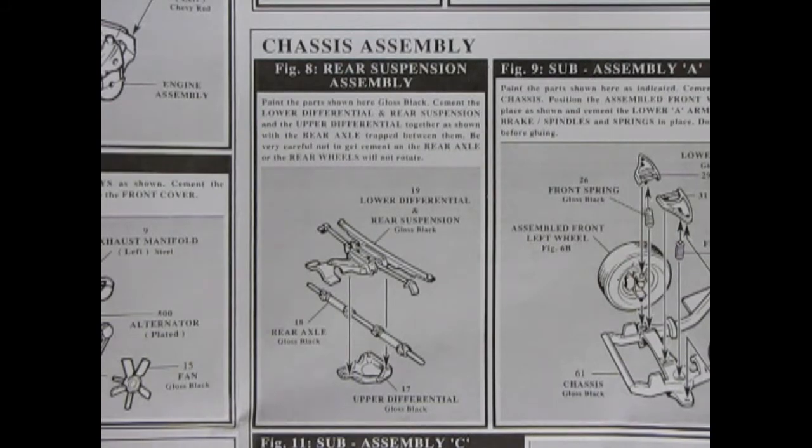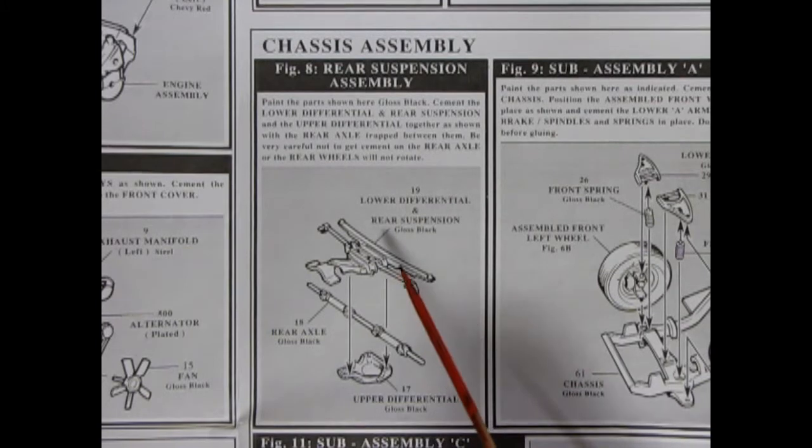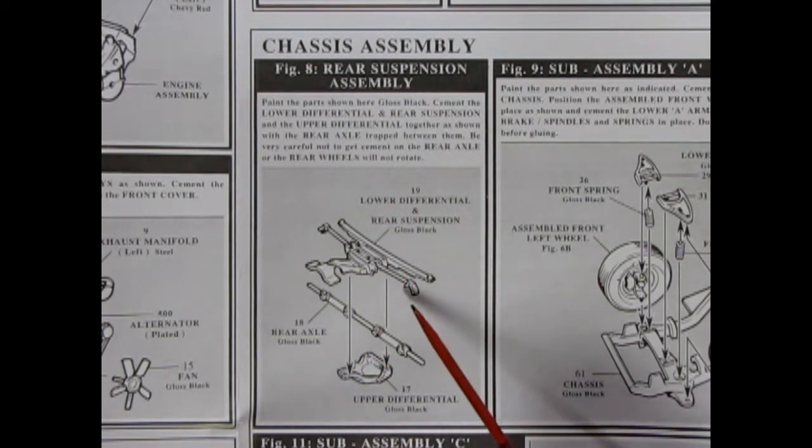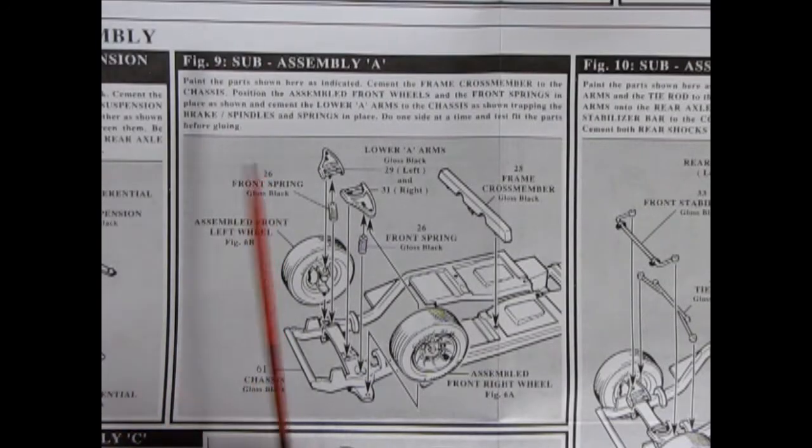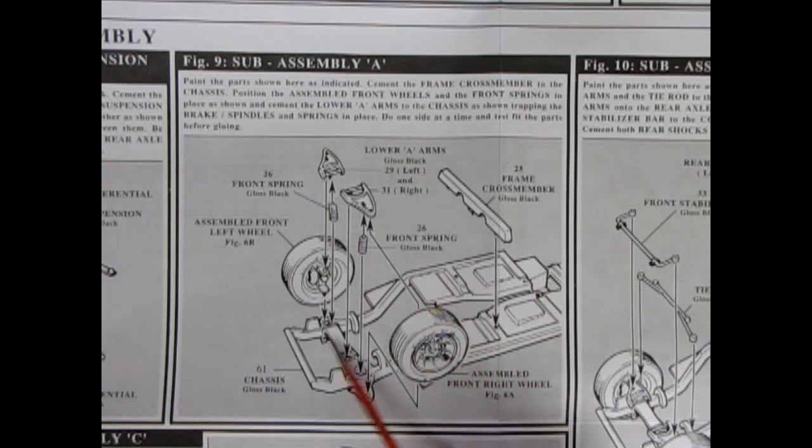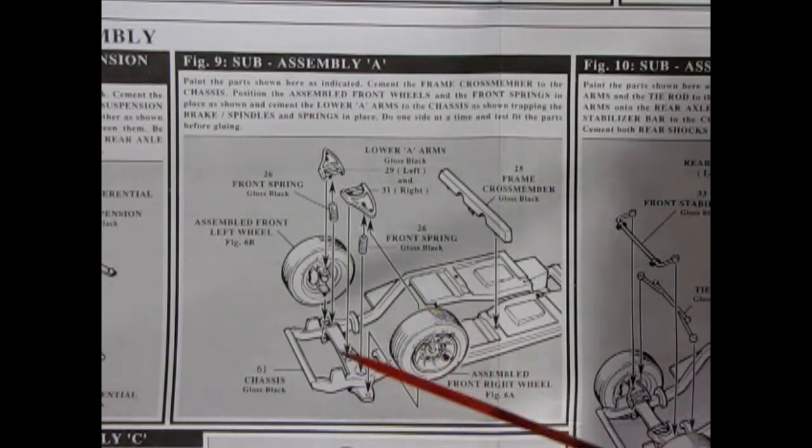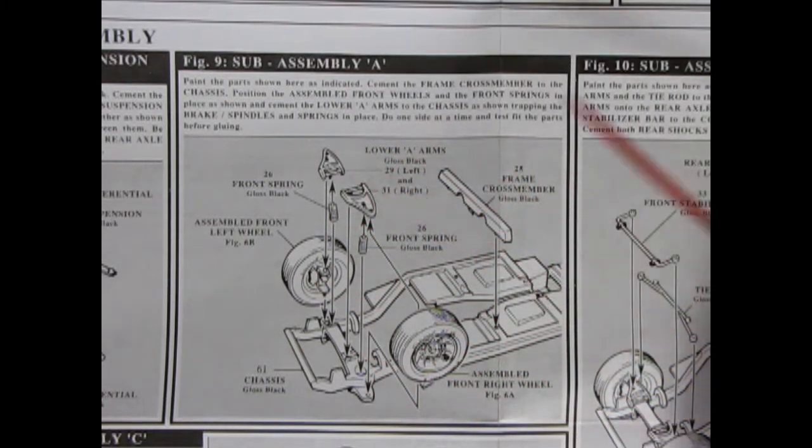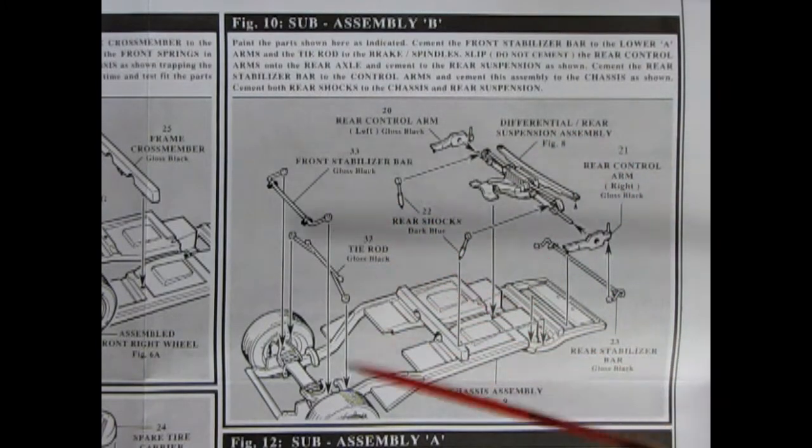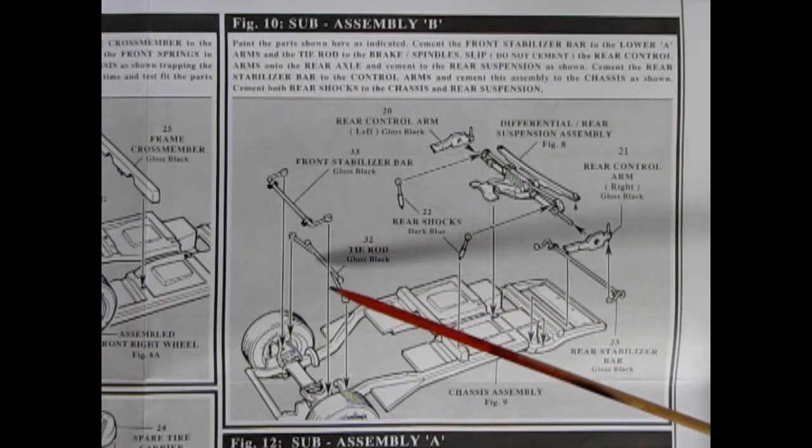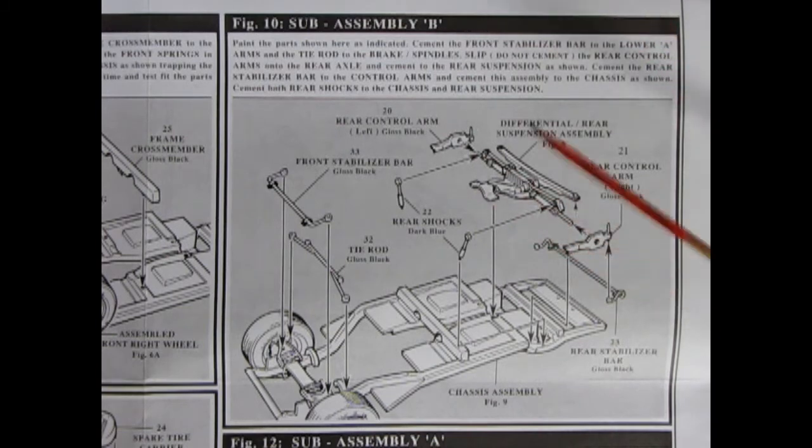Now our wheels have to glue on to something, so before we lose our mind in Detroit Rock City, we have our rear chassis assembly. So this is the rear suspension which has the lower differential and rear springs inside it. Then we've got our rear axle going here and our upper differential case. All of this will glue together and there you'll have your wheels. Now be careful not to get glue in here because your wheels will rotate on the axle. Now we move into figure nine with the sub assembly A. This is of course the front of our chassis, just the first part of it. So we are going to put our wheels down here. We're going to add in our springs and our lower A arms, and here we have the nice frame cross member which will all glue onto the chassis.